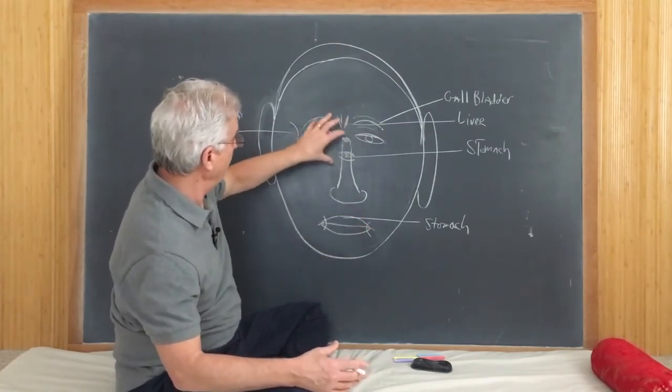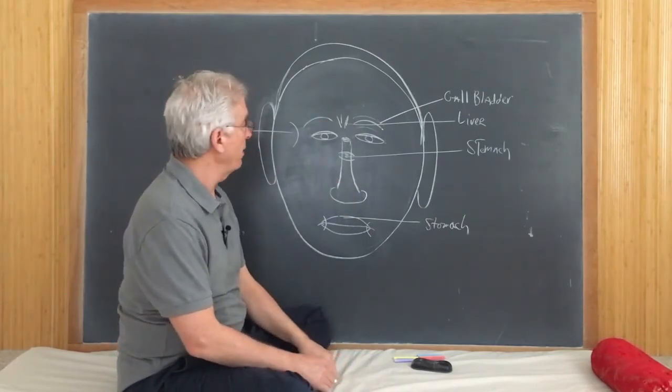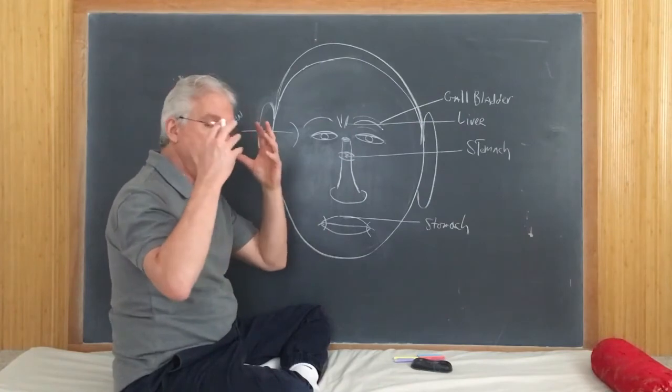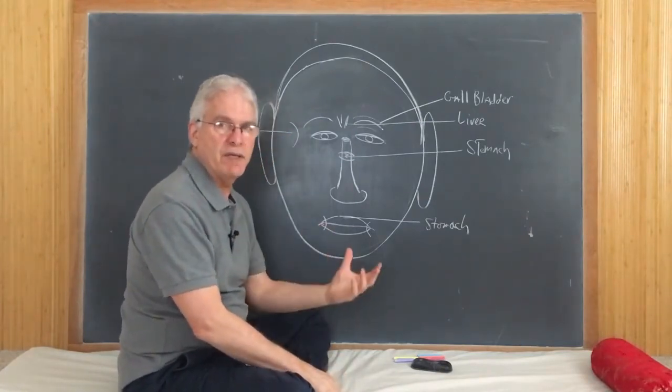But this look around the eyes shows you what's happening in the middle digestive area. If it looks kind of like open and swollen or it looks tight and contracted, all that's giving you indications.